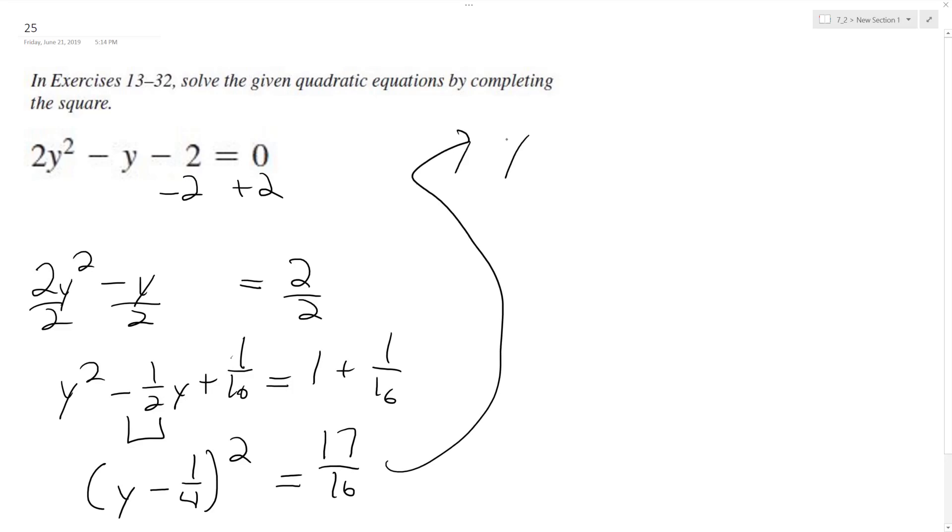Take the square root of both sides. We end up with y minus 1/4th equals plus or minus the square root of 17 over 4, because the square root of 16 is 4.